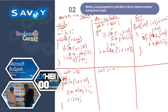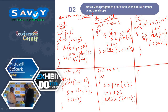Similarly for do-while: int i is equal to 0, do — System.out.println i, i is equal to i plus 2 — while i less than or equal to n. And for the for loop: System.out.println i. This is logic 1 and logic 2 for understanding. The same program is written in two different ways and three different loops — a better choice for you to understand.